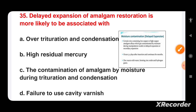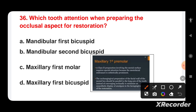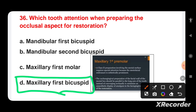Which tooth requires special attention when preparing the occlusal aspect for restoration? Options are: mandibular first bicuspid, mandibular second bicuspid, maxillary first molar, or maxillary first bicuspid. A Class 2 preparation involving the mesial surface of the maxillary first bicuspid requires special attention because the mesiofacial embrasure is aesthetically prominent.